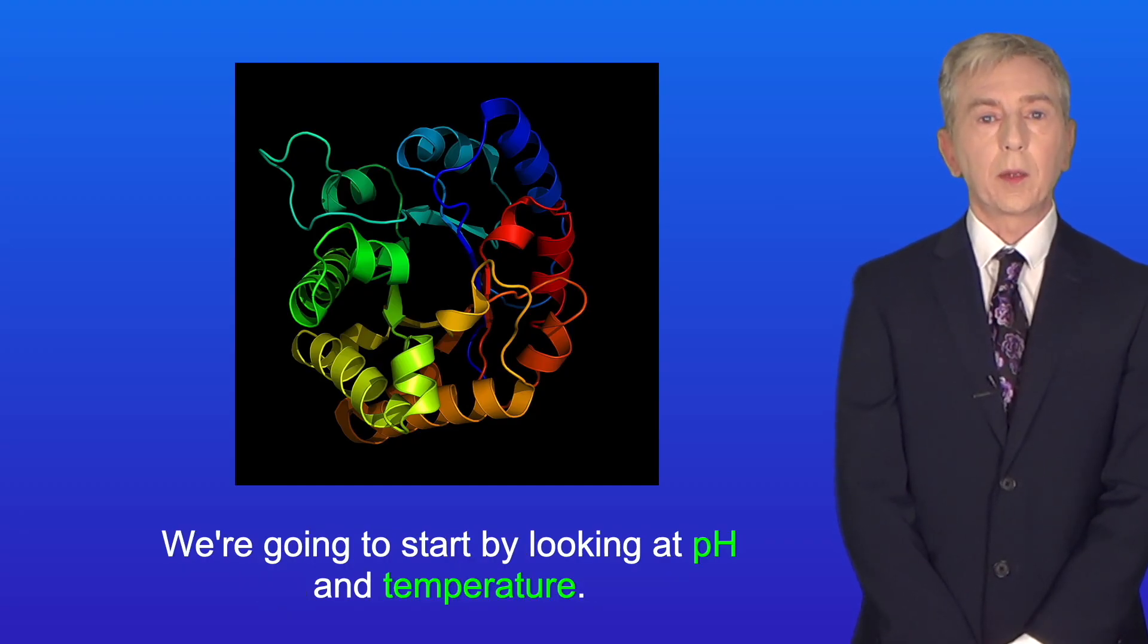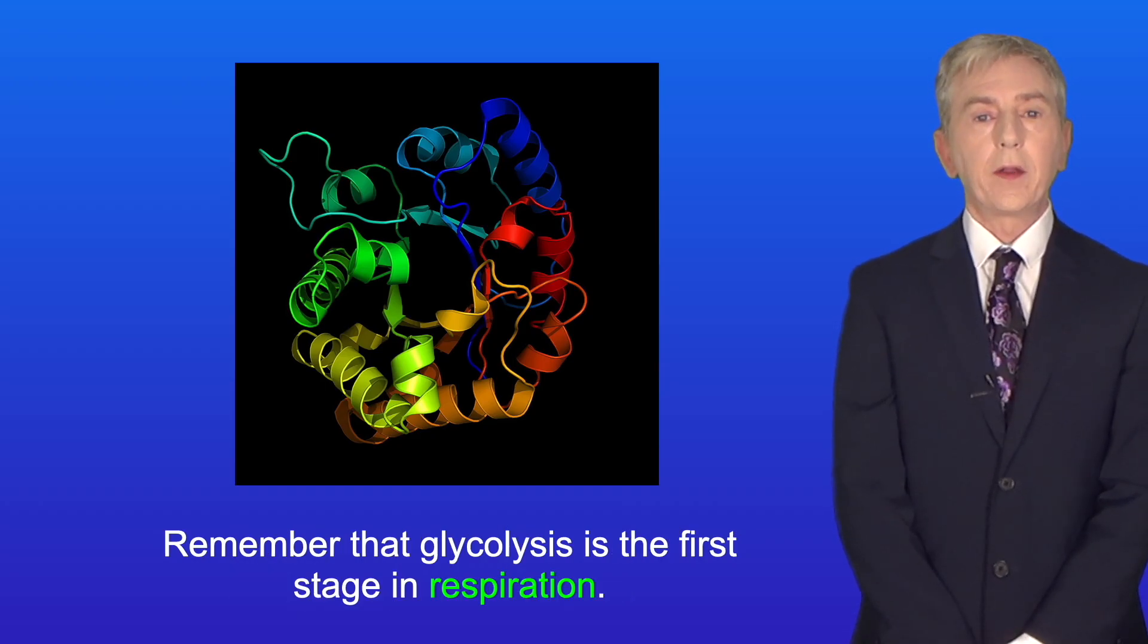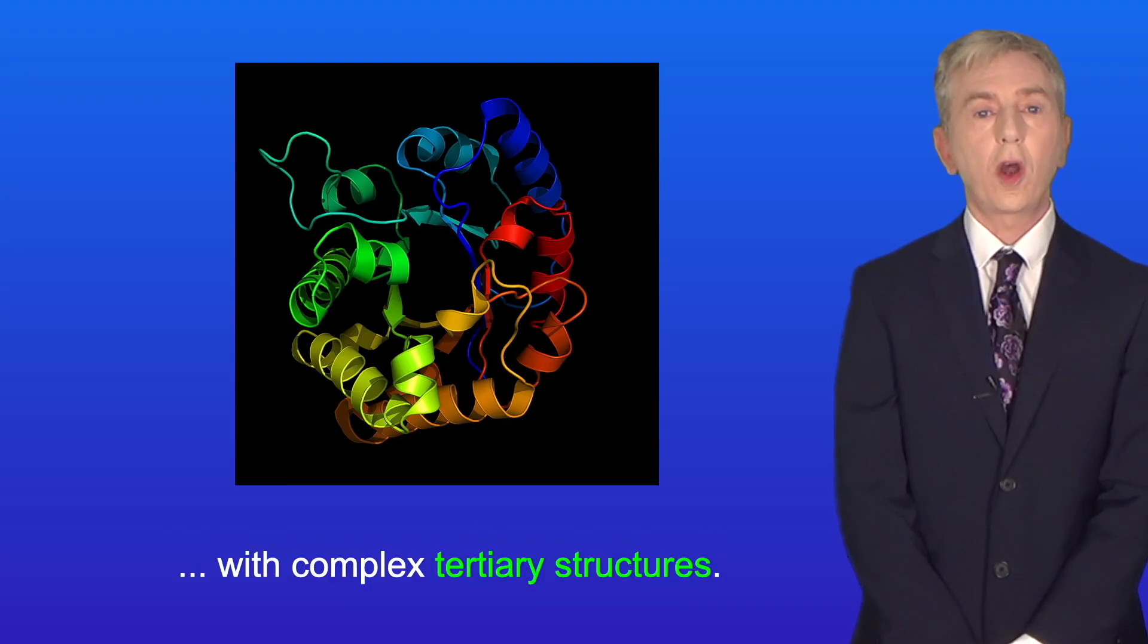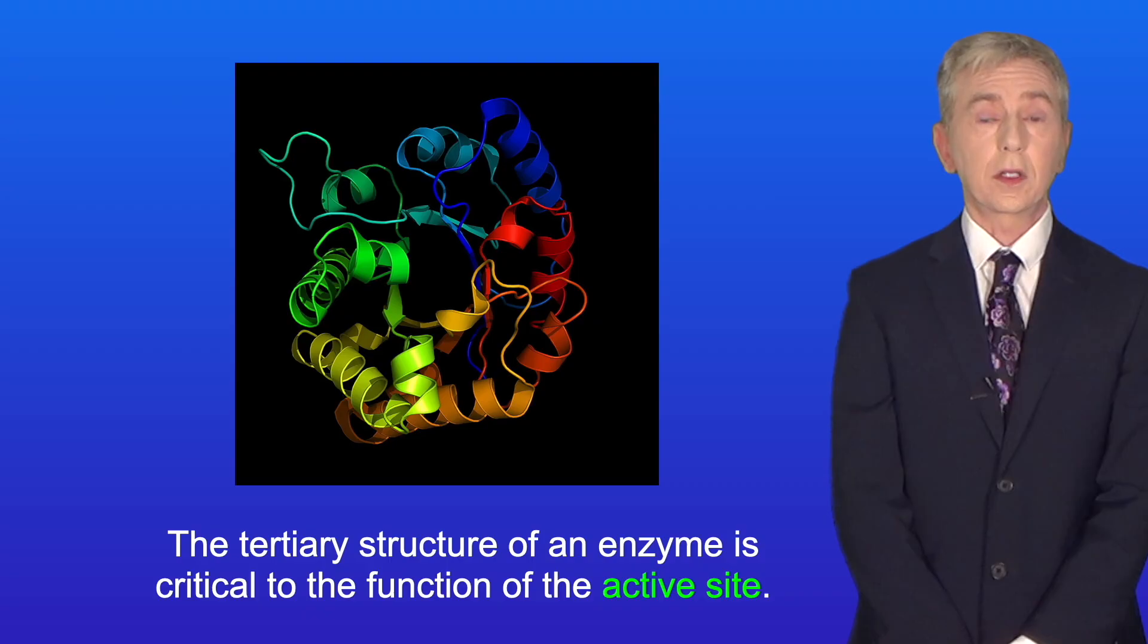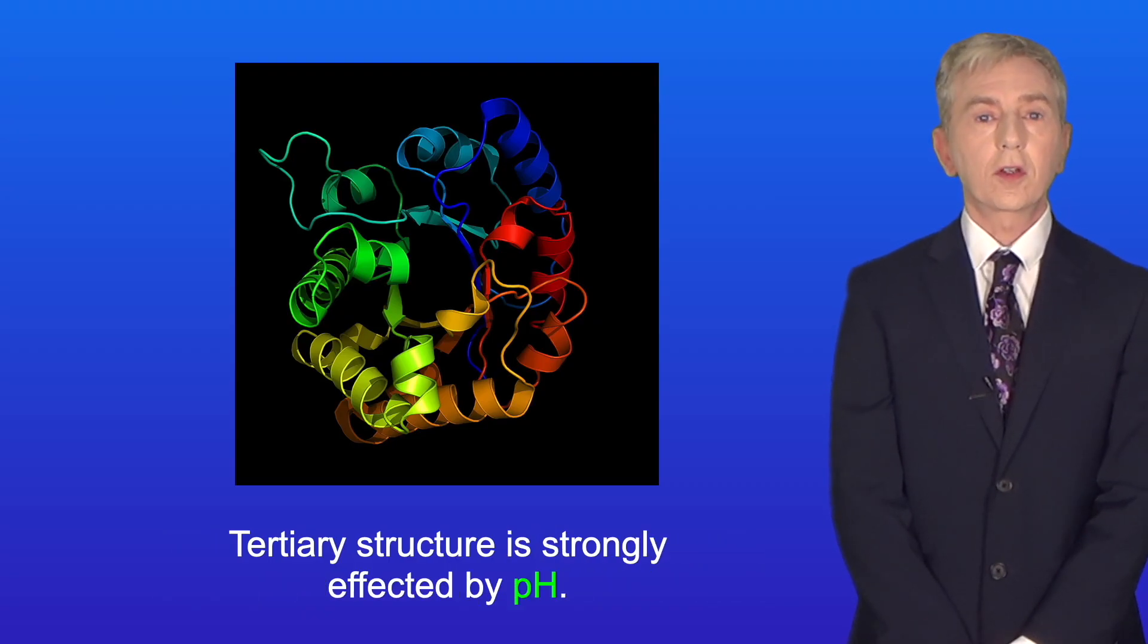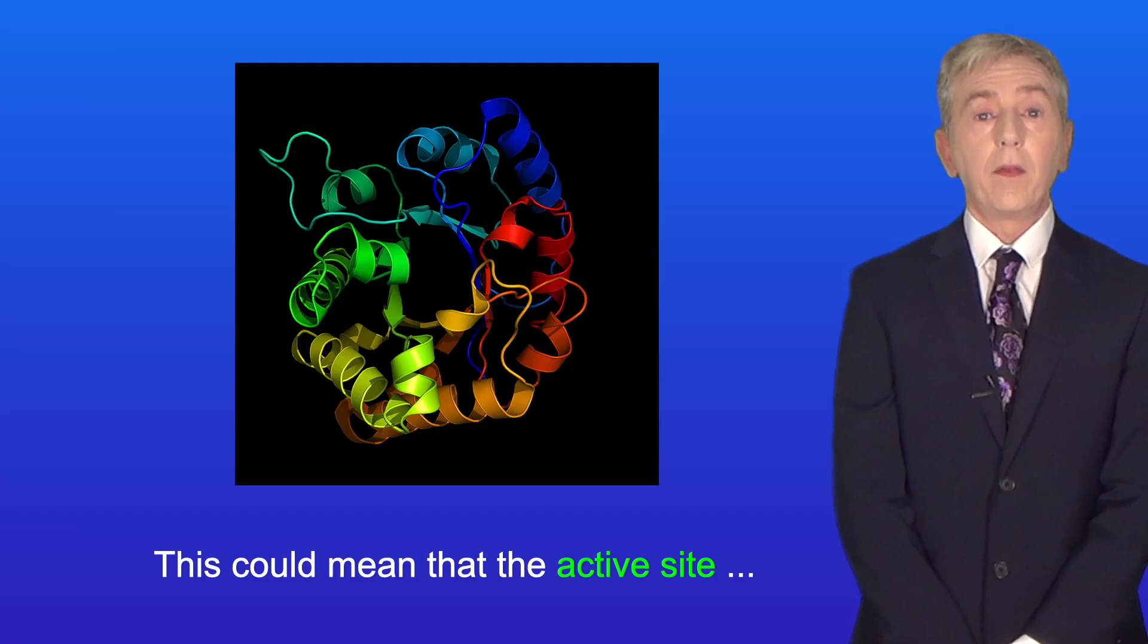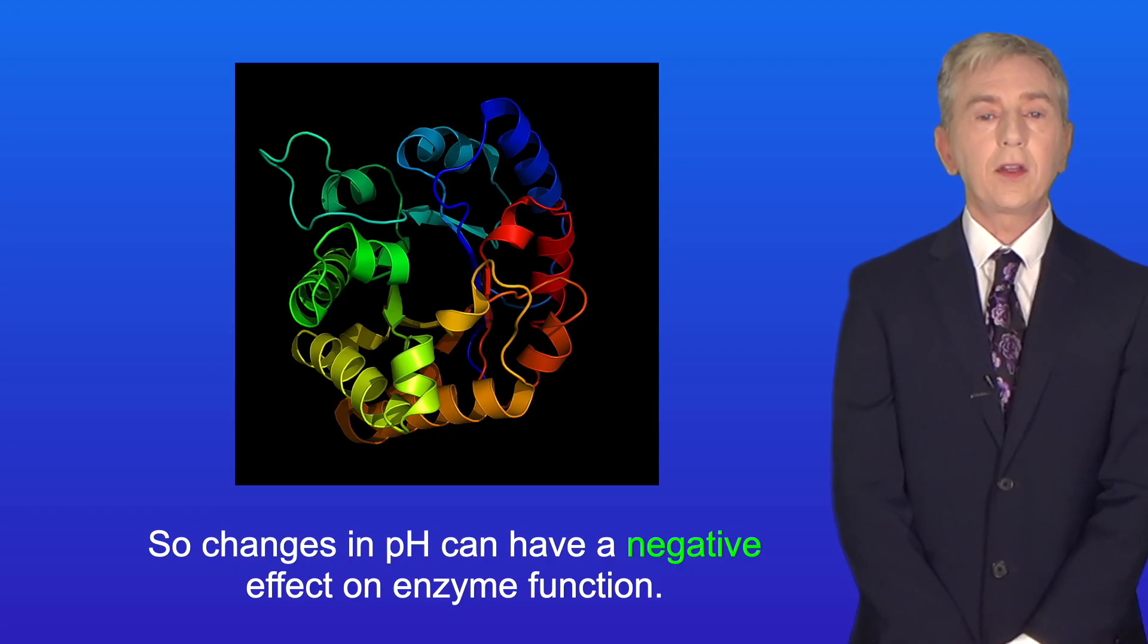We're going to start by looking at pH and temperature. I'm showing you here the structure of a key enzyme in glycolysis. Remember that glycolysis is the first stage in respiration. Now a key idea you need to understand is that enzymes are proteins with complex tertiary structures. And the tertiary structure of an enzyme is critical to the function of the active site. Tertiary structure is strongly affected by pH. If the pH fluctuates from the optimum, then the tertiary structure can change. And this could mean that the active site can no longer bind to the substrate effectively. So changes in pH can have a negative effect on enzyme function.